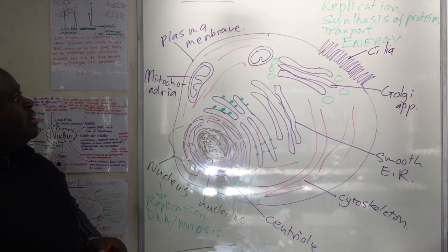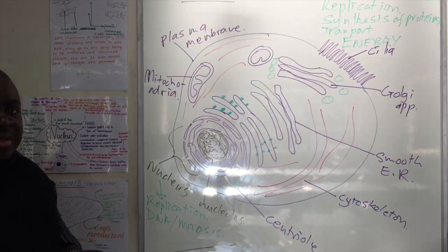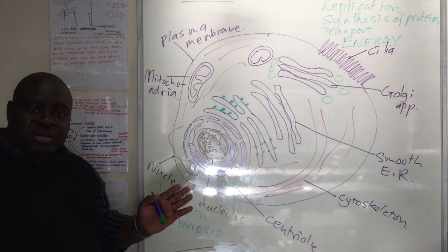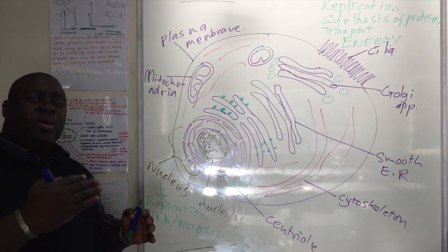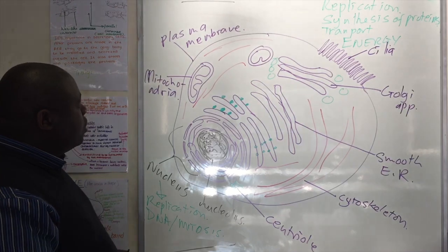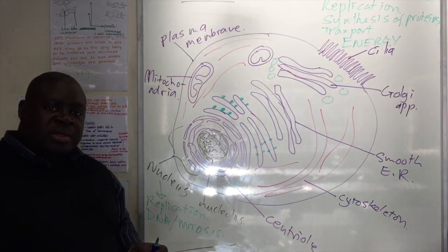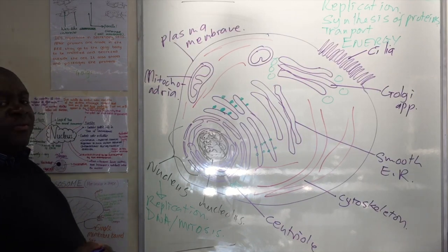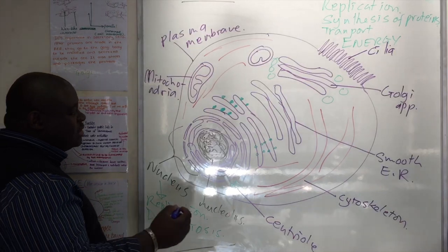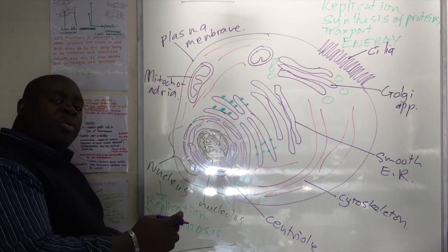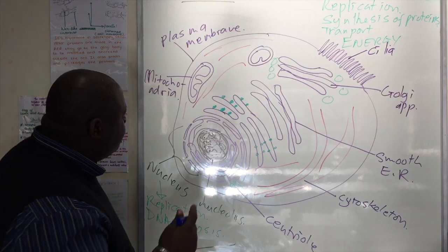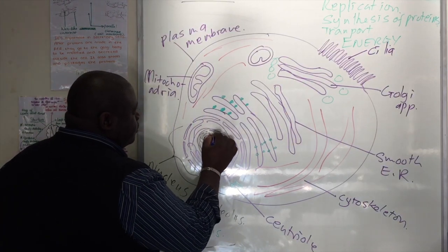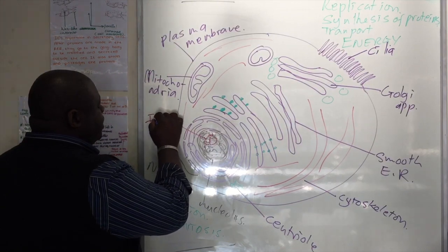Let's look at the other process: synthesis of proteins. This is very important because there are so many organelles involved, and you should be able to put them all in a sequence. To synthesize a protein, the most important thing is that you must get the information for this synthesis — to decide what sequence of amino acids should make the protein. That information comes from the DNA, the gene. So, first, we need information from the nucleus.